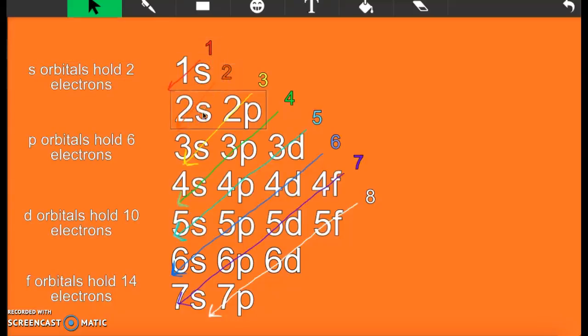You hit 2s, so fill your 2s. That can hold another 2 electrons because it's an s. If we have more than that, go to your number 3. The first energy level you hit is 2p. That one can hold up to 6.